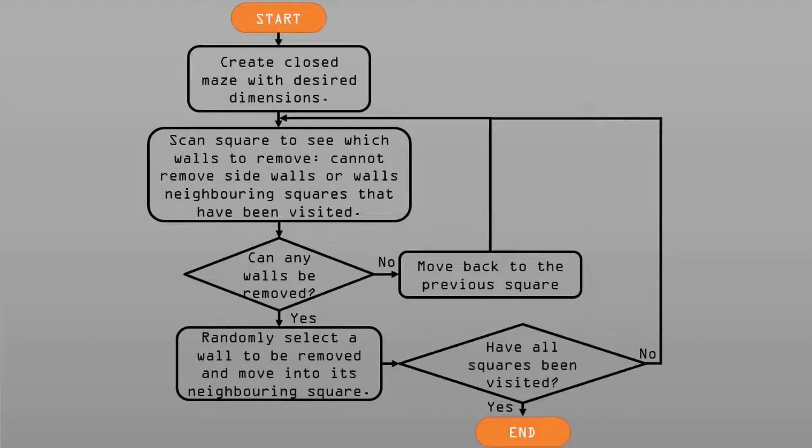This is obviously a lot faster in practice, but this is just a demonstration. Here it's in another dead end — it can't remove any of the walls, so it'll keep going back until it can remove another wall. After removing that wall, it's visited every single cell in the maze, so now you have a complete maze. This is a flowchart of the algorithm, which is known as recursive backtracker and uses something called a depth-first search.